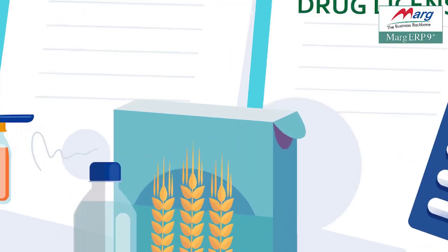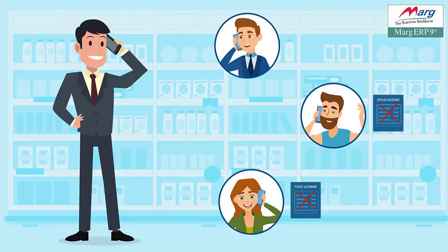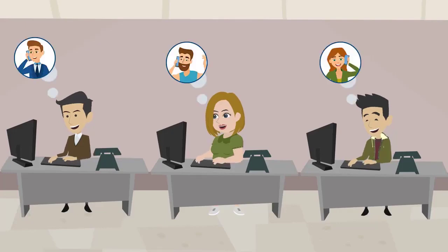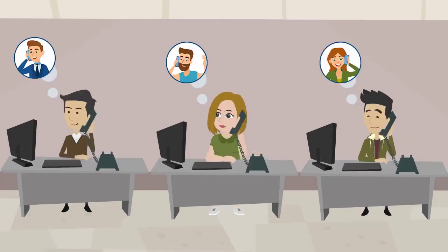So if the parties with whom you deal don't have a drug license or food license, it becomes difficult for you to know which parties don't have the required license and which products can or cannot be sold to them. As a distributor, you may have appointed operators who take orders by phone from retailers and process the billing.